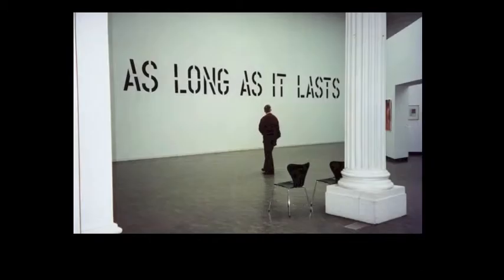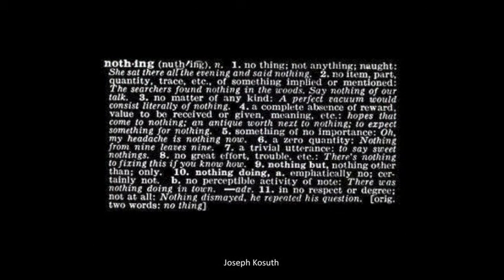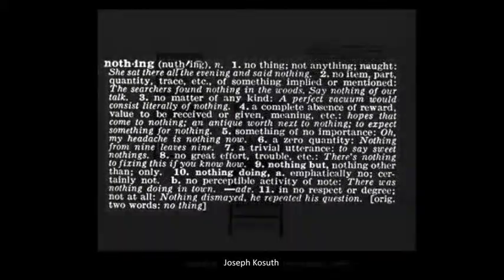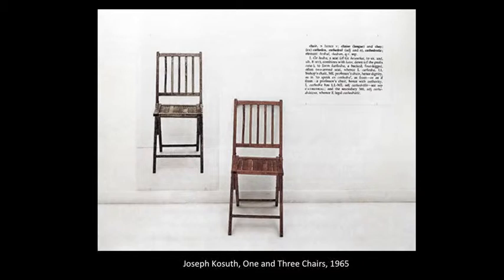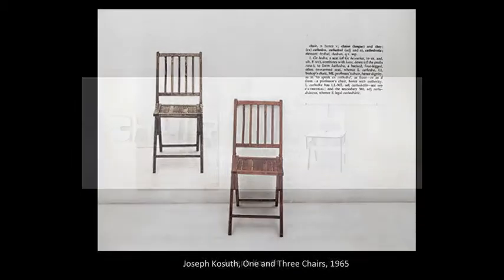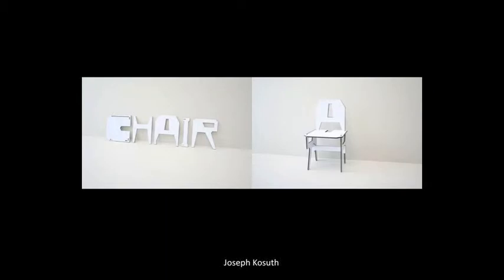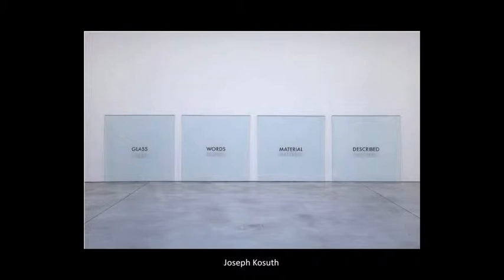Conceptual work requires the viewer to engage actively for art to happen. In 1969, Joseph Kosuth wrote: 'The value of artists after Duchamp can be weighed according to how much they question the nature of art.' Kosuth questions the nature of meaning and existence in One and Three Chairs, which included an actual chair, a photograph of a chair, and a printed definition of a chair which hung on the wall. Much of his work explored this space between language, object, and idea.